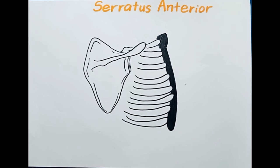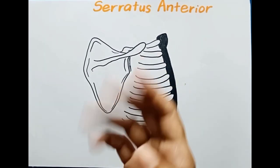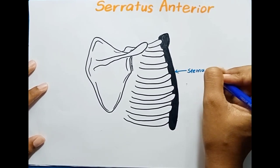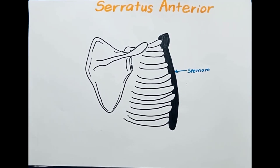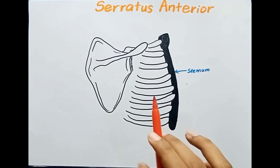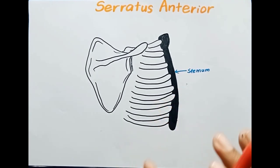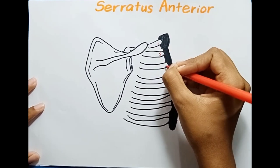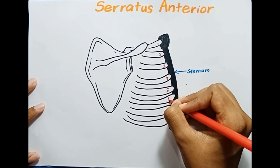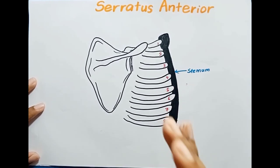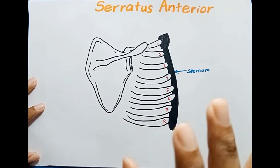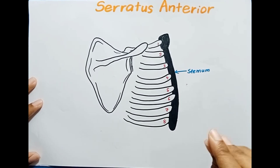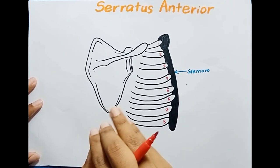First we will talk about the proximal attachment of the serratus anterior muscle. Here you can see the sternum and the ribs. The serratus anterior muscle gets attached to the external surface of the lateral parts of the first to eighth ribs. Here we can see the ribs up to eight, and the external surface of the lateral parts is the proximal attachment. This muscle originates from here and inserts into the anterior surface.